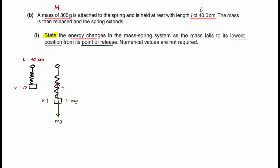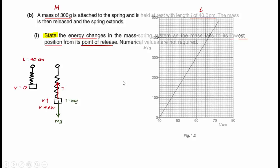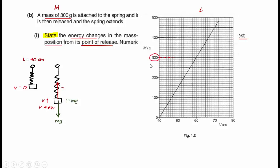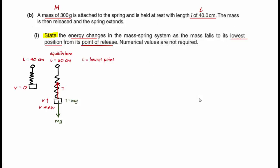From Figure 1.2, for a mass of 300 grams, the spring length is 60 cm, which is the equilibrium position. After passing equilibrium, the mass moves toward its lowest point. As it does so, the tension becomes increasingly larger than mg, and the speed decreases until the mass is instantaneously at rest at the lowest point, after which it moves back up.